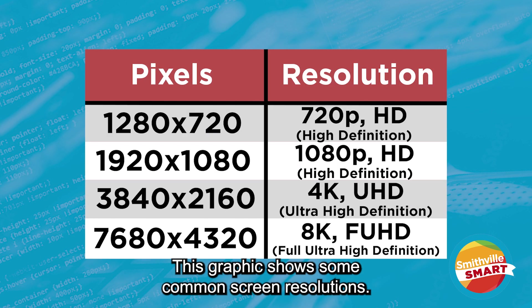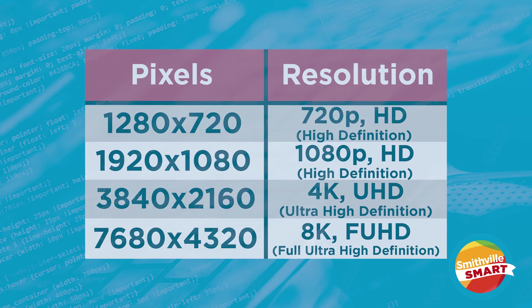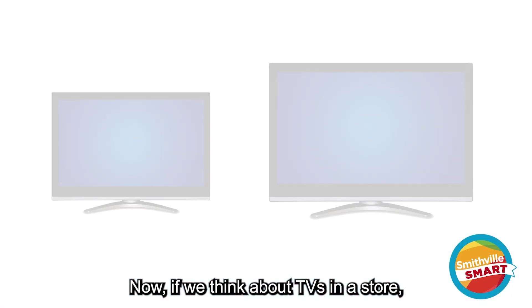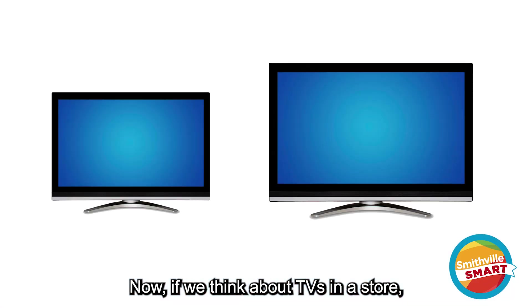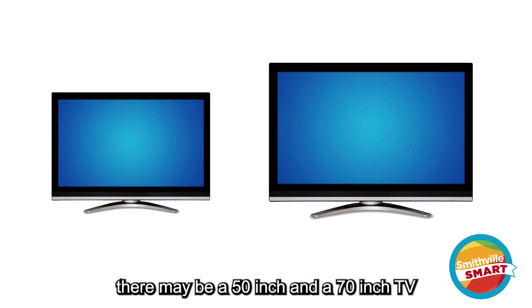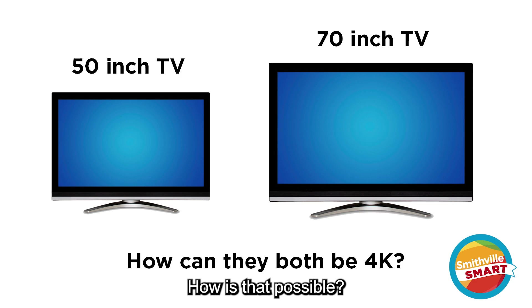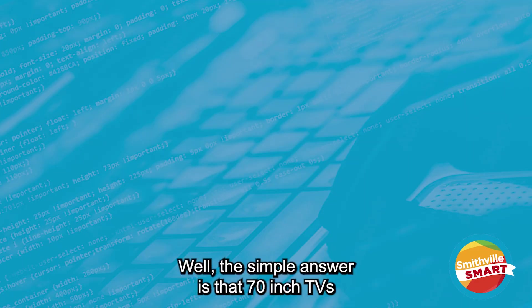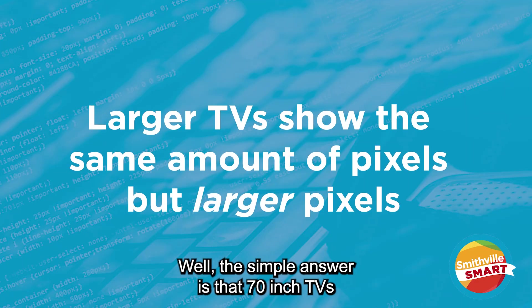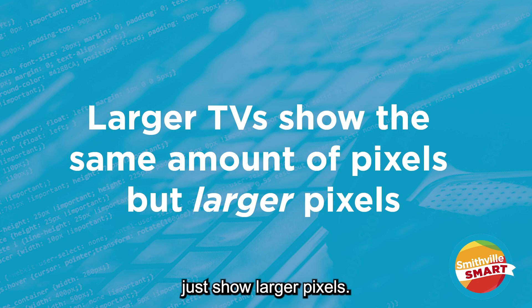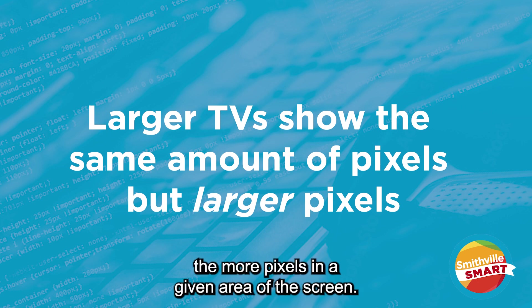This graphic shows some common screen resolutions. Now, if we think about TVs in a store, there may be a 50-inch and a 70-inch TV that both state they are 4K. How is that possible? Well, the simple answer is that 70-inch TVs just show larger pixels. The higher the resolution, the more pixels in a given area of the screen.